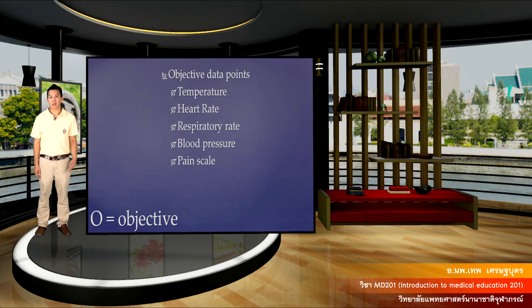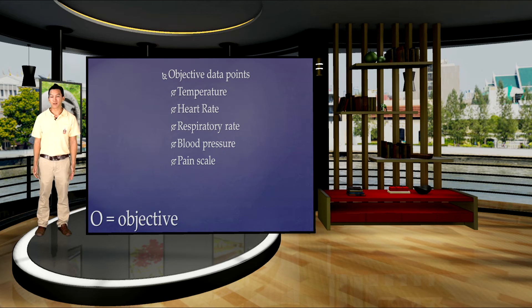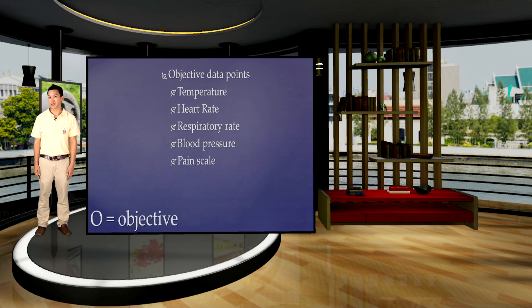The objective aspect, or the O part of the SOAP note, includes objective data points. This includes things you can record such as the patient's temperature, heart rate, respiratory rate, blood pressure, and a pain scale for patients who may be in the hospital — such as those who have undergone surgery in the recent past.